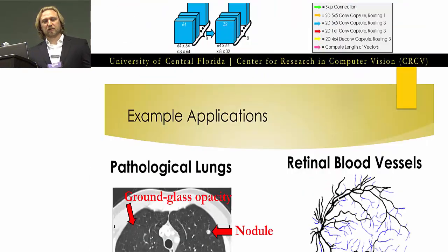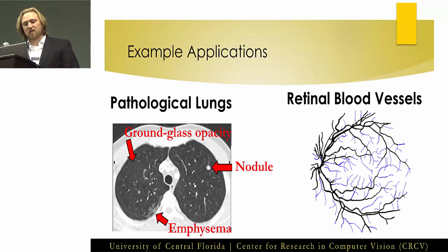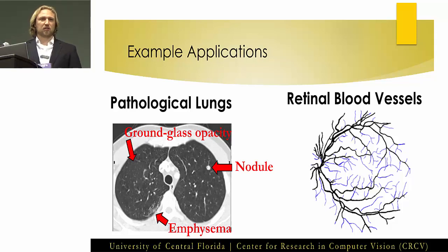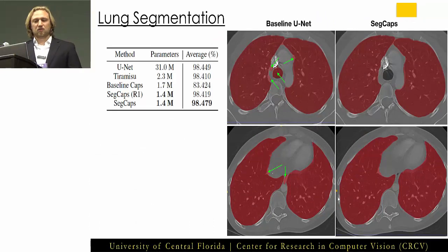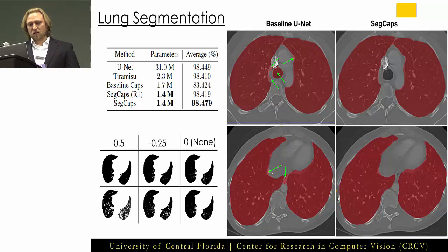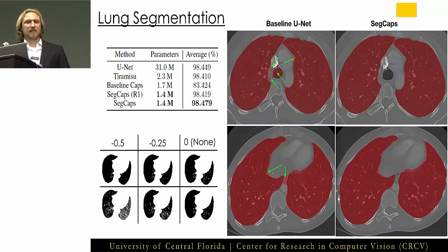One application is pathological lung segmentation. This large-scale medical CT scan dataset has many different pathologies like ground glass opacity, nodules, and emphysema, among other issues that make segmentation challenging. Here are the results comparing against the baseline U-Net. U-Net struggles in areas with similar Hounsfield unit values, showing a lot of segmentation leakage. SegCaps was able to outperform U-Net by a close margin while using about 95 percent fewer parameters — which was very exciting to see.